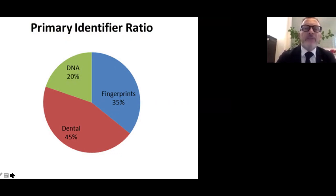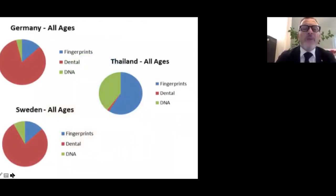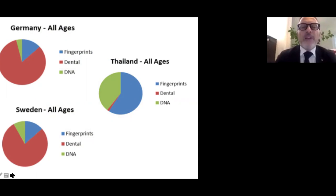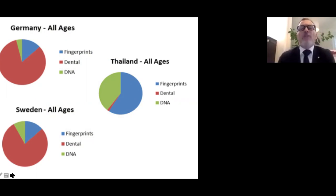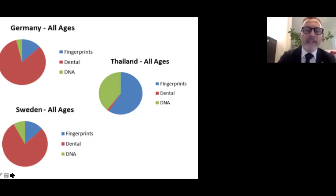For the tsunami of 2004, people were kept in a hot and humid environment and could not be identified visually because of decomposition. Here is just an example of how dental identification is so important and powerful. The figures related to the tsunami 2004 show 20% of identifications performed by DNA, 35% by fingerprints, and 45% by dental methods. Comparing these figures by nationality — for example Germany and Sweden vs. Thailand — most Thai victims were identified using fingerprint comparison because Thailand records fingerprints, while most German and Swedish victims were identified by dental identification methods.